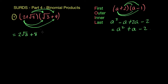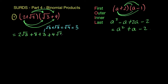Then we have root 3 times root 3. We've seen this a couple of times — root 3 times root 3 gives you root 9, and the square root of 9 is 3. So if you're multiplying square roots of the same number onto themselves, they just become that whole number. And then last of all, root 3 times 4 gives you plus 4 root 3. Collecting like terms: 2 root 3 plus 4 root 3 gives 6 root 3, and 8 plus 3 gives plus 11.